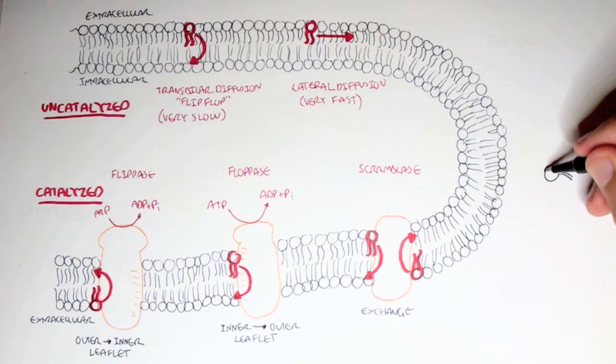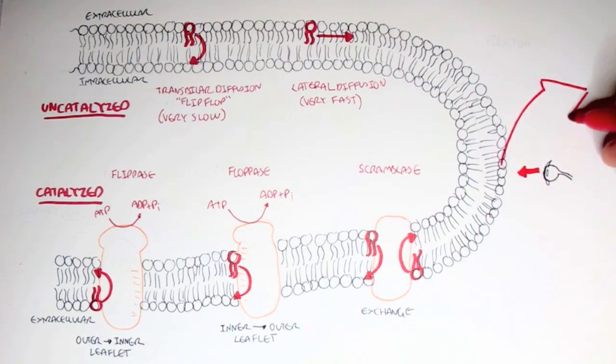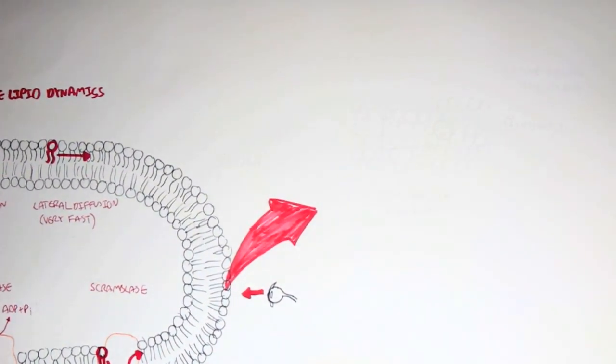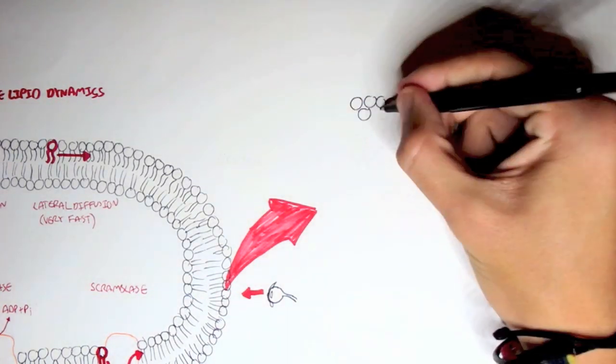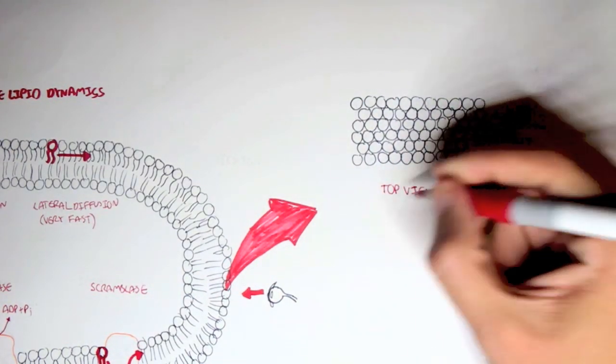Now, there are other types of movements within the membrane structure. If we have a look on the top of a membrane, for example, so like a bird's eye view, and we zoom into this structure. The lipid membrane will look like this from the top view. So here's the top view of the membrane.